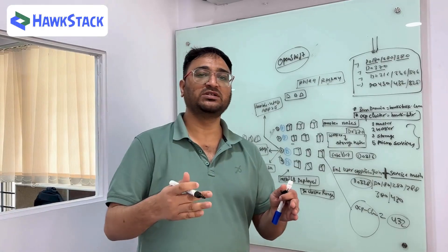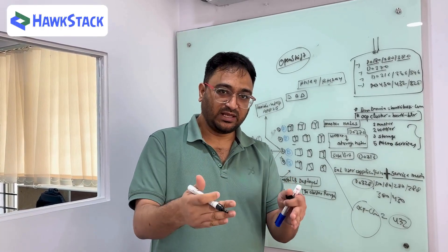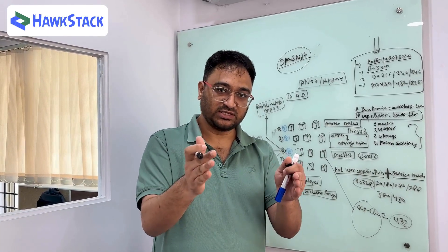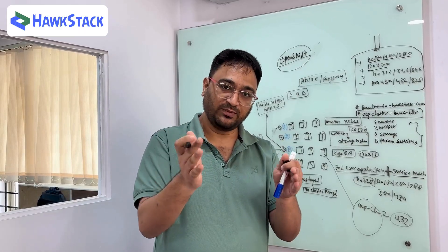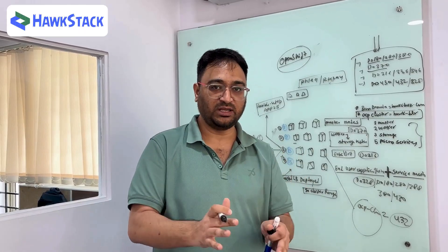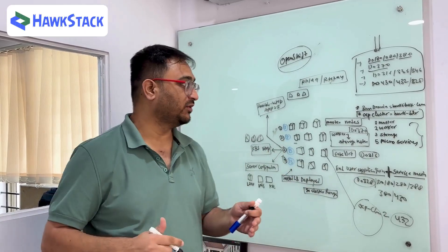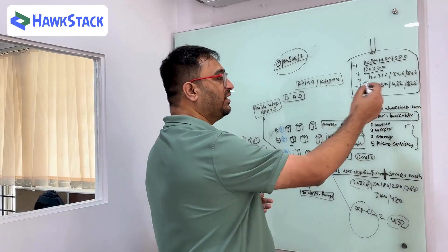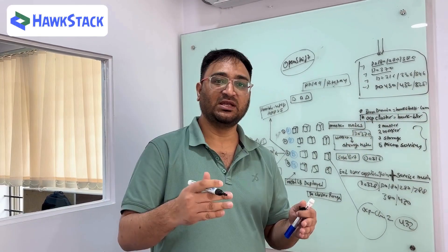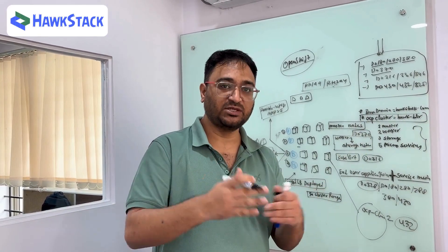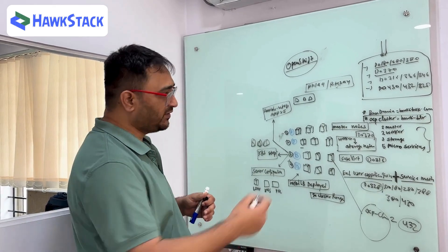Then we have something called KubeVirt, which is basically Kubernetes virtualization — it is the main platform we will use to implement all your knowledge. We also have the migration part, advanced cluster management, ACM 430, security, and service mesh, basically DO328. So as a Red Hat Certified OpenShift architect or infra architect, there are many challenges when you do the certifications.